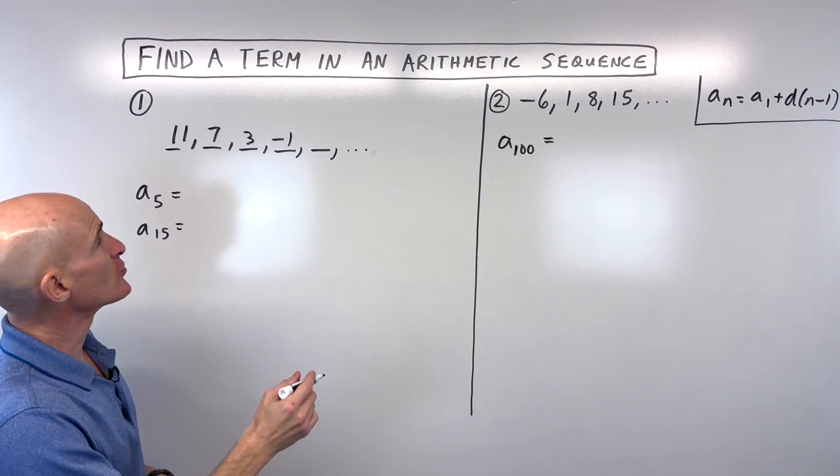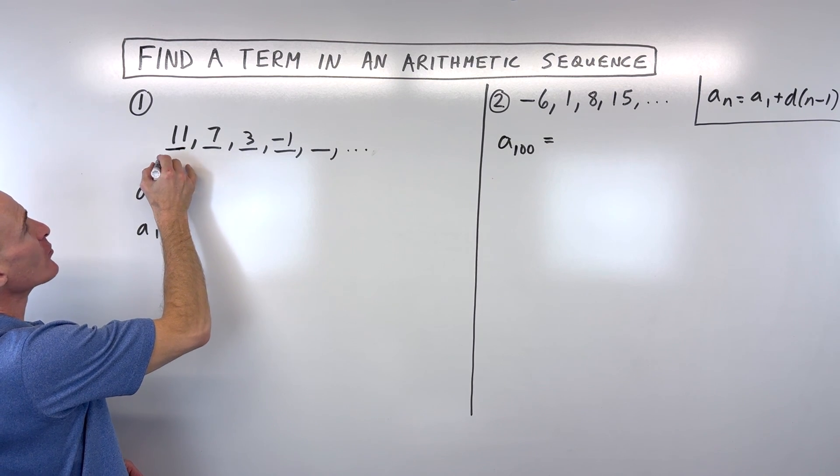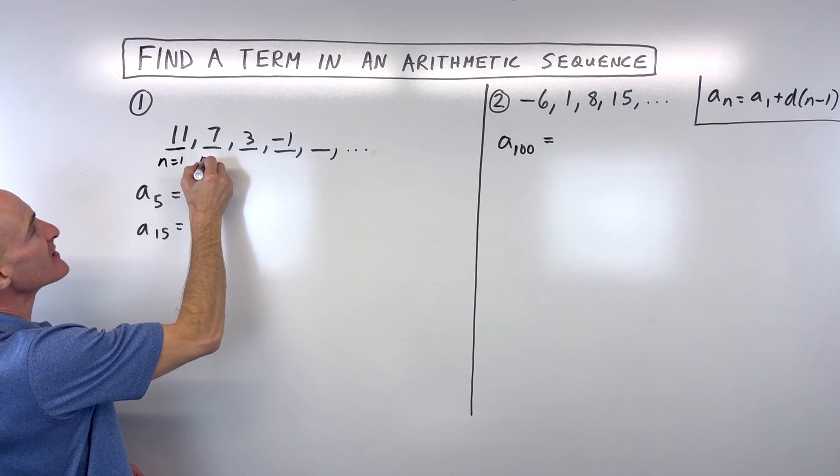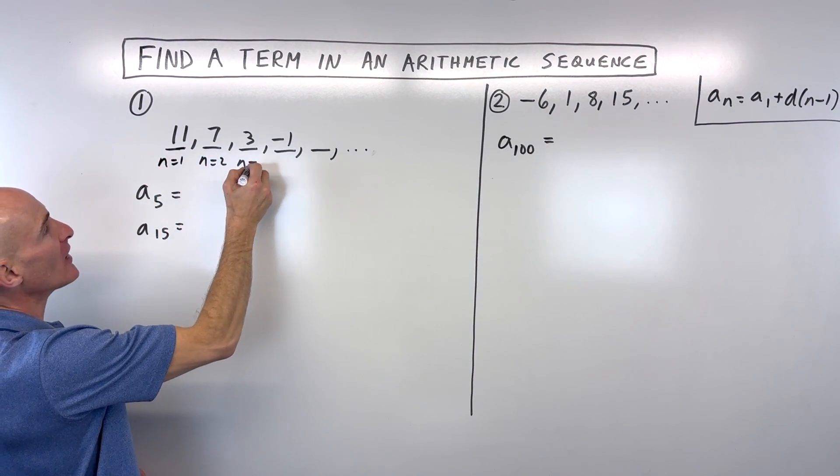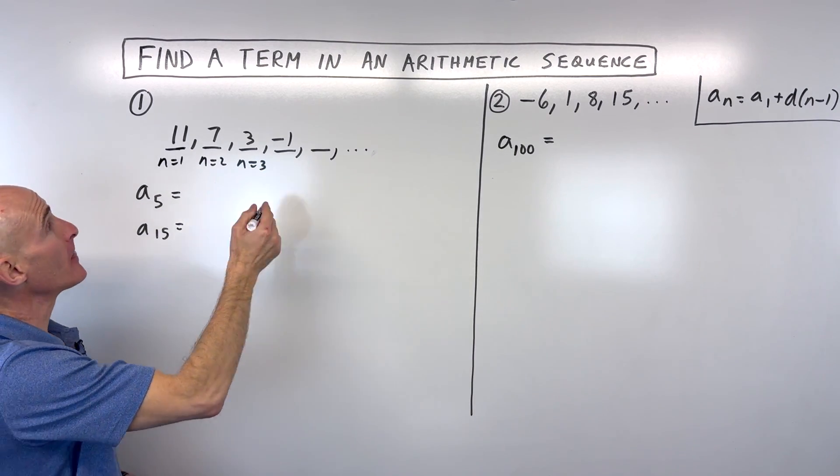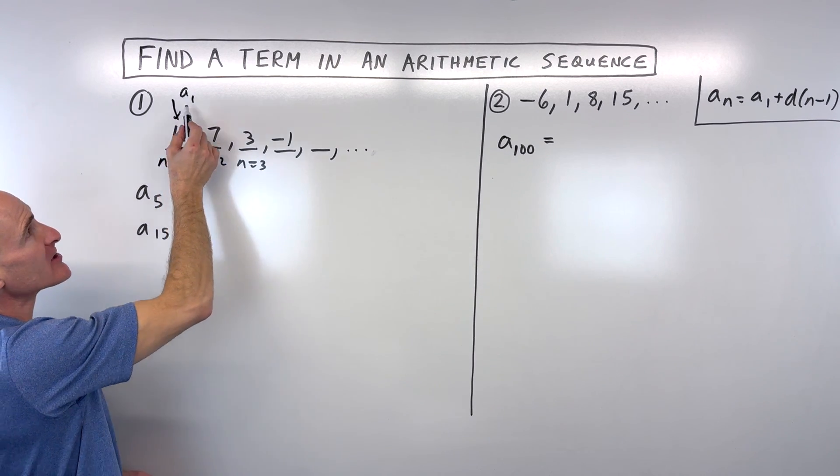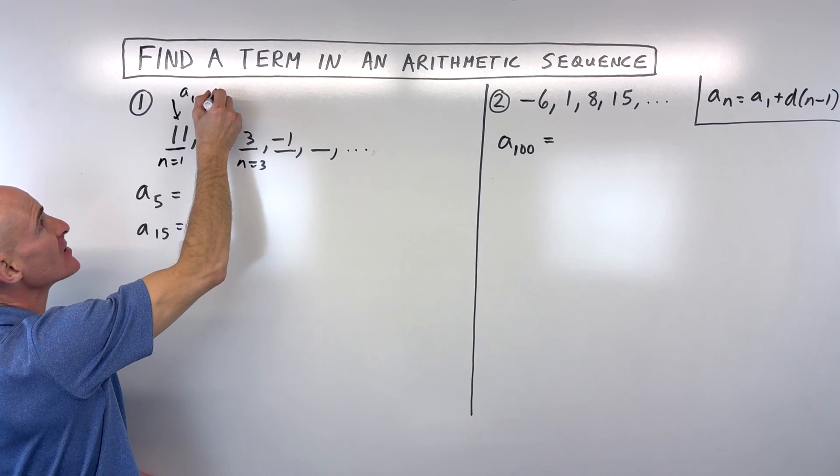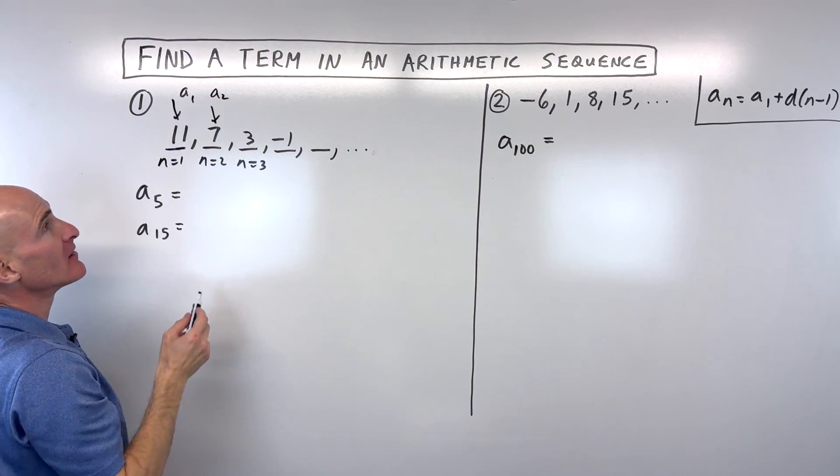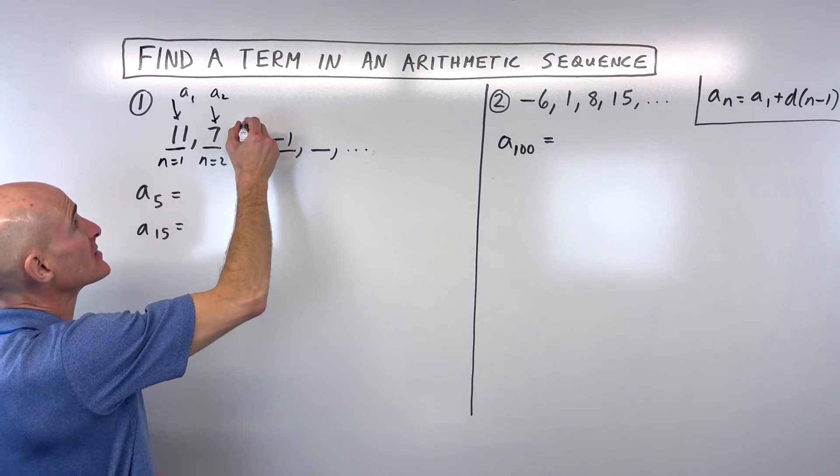And I want to tell you a little bit about the notation real quick. This first term, we call this n equals 1. The second term, we say n equals 2, n equals 3, etc. But the value of the term, like what the term actually equals, we call that a sub 1, like subscript 1. This is a sub 2, like the second term's value. A sub 3, etc.